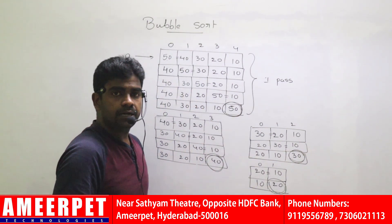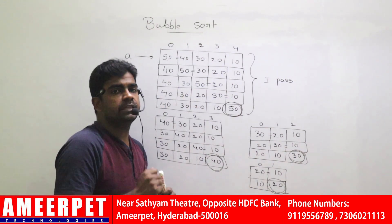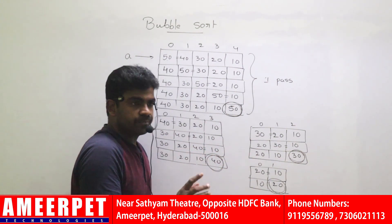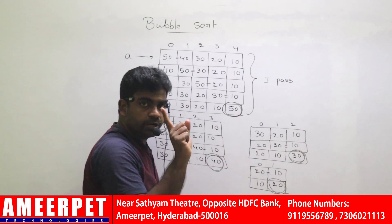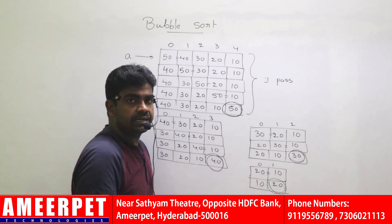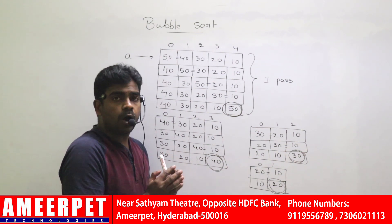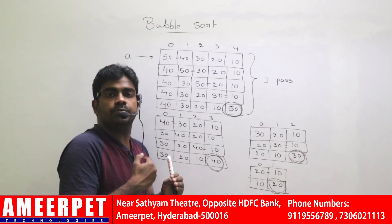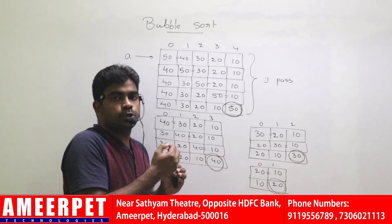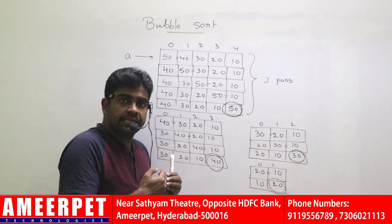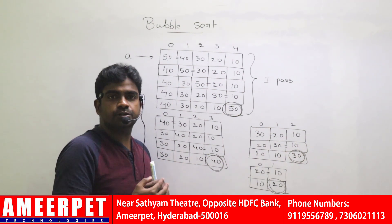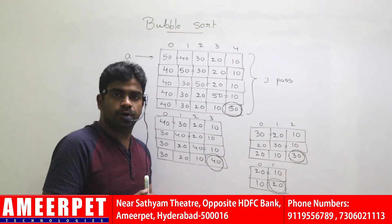If only one element is there, no need to sort. Remember this point: if only one element is there, sorting is not required. If two elements are there, only one comparison is required — sort one element and the next element gets sorted automatically. This is how the Bubble Sort Algorithm works. How to perform swapping operations and how to use loops, we will see in the code implementation part in the next video. Hope you understood the Bubble Sort Algorithm. Thank you all.